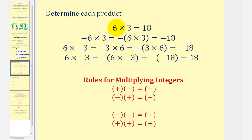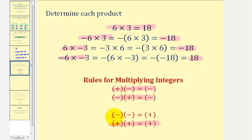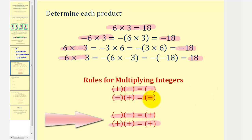Let's summarize: a positive times a positive is positive; a negative times a positive is negative; a positive times a negative is negative; and a negative times a negative is positive. When multiplying two integers, if the signs are different, the product is negative. And if the signs are the same — both positive or both negative — the product will be positive.